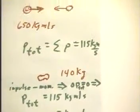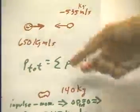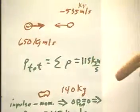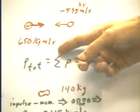So we have the following picture. One mass, or one object, has a total momentum of 650 kilogram meters per second.